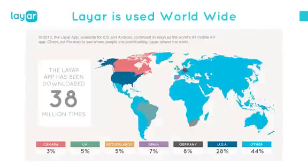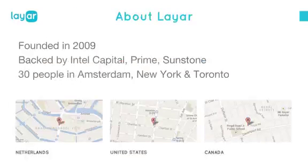Looking globally, the US is the largest market, with Germany trailing right behind at 8%, followed by Spain, the Netherlands, the UK, and Canada. Overall we see usage in over 200 countries — and it keeps growing. We were founded almost five years ago in 2009 here in Amsterdam. We're backed by Intel Capital, the largest VC in the world, as well as Prime Ventures in Amsterdam and Sunstone Capital in Denmark. We're 30 people, mostly based in Amsterdam.